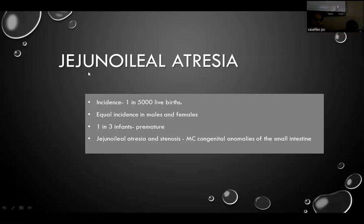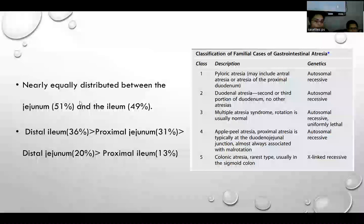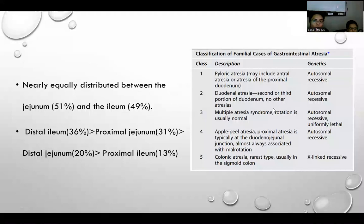Jejunoileal atresia has an incidence of 1 in 5,000 live births with equal incidence in males and females. Almost one in three infants with jejunal atresia are premature. Jejunoileal atresia and stenosis together form the most common congenital anomaly of the small intestine, equally distributed between jejunum and ileum. Genetic association is mostly related to type 3 and type 4, and most atresias are autosomal recessive; rare colonic atresias are X-linked recessive.